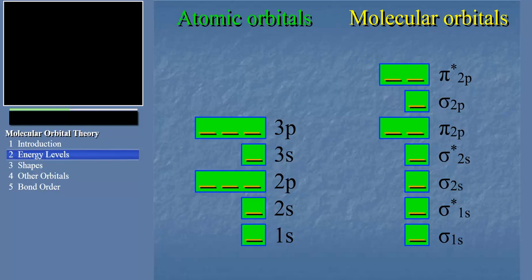For atomic orbitals, it was possible for two electrons to adopt the same waveform, or in other words, occupy the same orbital. The same is true for molecular orbitals. Here's how the electrons would fill, one at a time, into successively higher energy atomic orbitals. And here's how the electrons would fill into the molecular orbitals. You can see that the way in which the electrons fill these orbitals is much the same. We'll dive into the specific aspects of molecular orbital theory in more detail in the following slides.